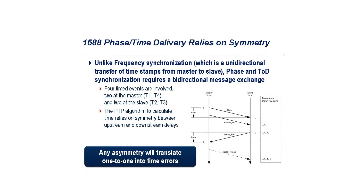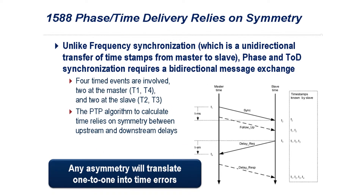For phase and time delivery, 1588 actually needs to operate bi-directionally. In order to make that work and get the required accuracy, you actually need every network element to support and participate in the 1588 time-stamping — at minimum, and sometimes even in the actual protocol.